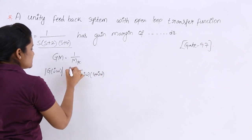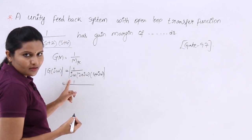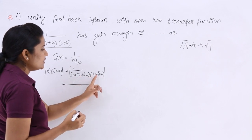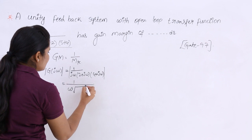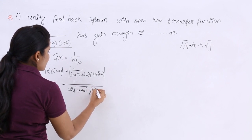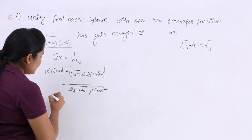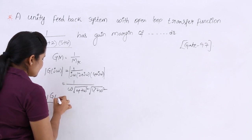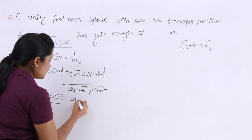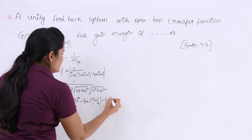Taking the modulus, the magnitude becomes 1 divided by ω·√(4 + ω²)·√(16 + ω²). The phase of G(jω) is equal to minus 90 degrees, minus tan⁻¹(ω/2), minus tan⁻¹(ω/4).